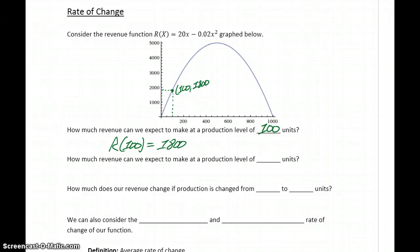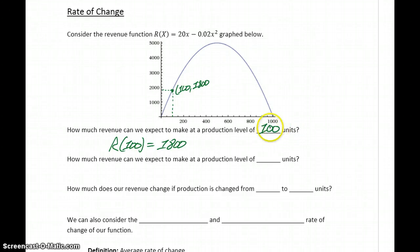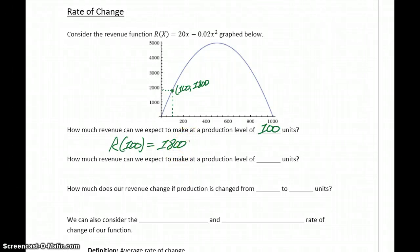So whatever it is that we're producing in this example, if we're at a production level of 100 units — per month, per week — at that production level we're generating a revenue of $1,800, again per month, per week, whatever that time period is.